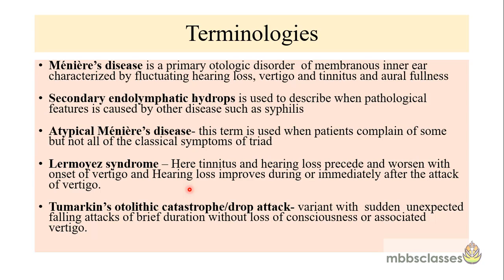There are different terminologies in relation to Meniere's disease. Meniere's disease is a primary disorder of the membranous inner ear characterized by fluctuating type of hearing loss, vertigo, tinnitus, and aural fullness. When endolymphatic hydrops is caused by other diseases such as syphilis, it is labeled as secondary endolymphatic hydrops. In some patients, when you take history, you may not get all the triad of symptoms — in that case it is labeled as atypical Meniere's disease, when the patient complains of some but not all of the classical triad symptoms.